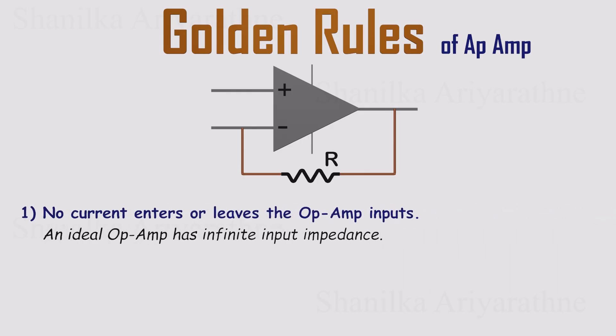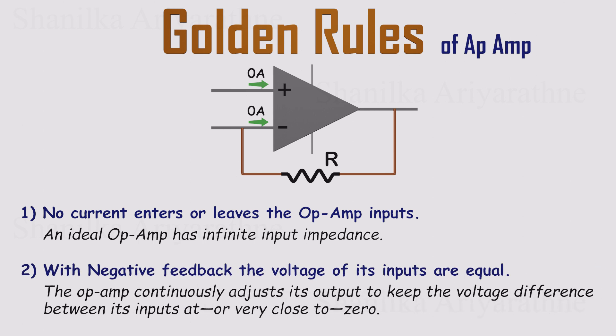Golden rule one: no current flows into the input terminals. That's because an ideal op-amp has infinite input impedance. Golden rule two: with negative feedback, the voltages at the inverting and non-inverting inputs are equal. The op-amp constantly adjusts its output to make the difference between those inputs as close to zero as possible. These golden rules only apply when negative feedback is present, but when it is, they give us a really simple way to predict how the circuit will behave.